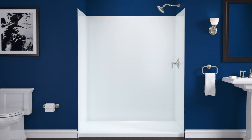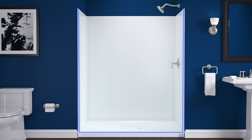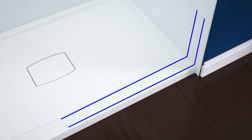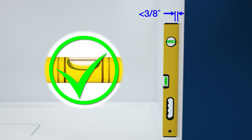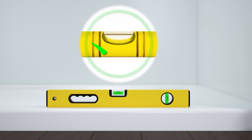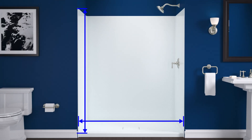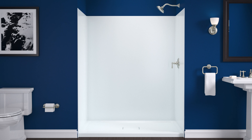Before you begin the installation, confirm the bath or shower ledge and wall meet the following requirements. The ledge and wall must have at least 3 inches of flat surface. The walls must be within 3/8 inch of plumb. The ledge must be level. Confirm the door is correctly sized for your bath or shower. Refer to the shower space measurement video for Kohler sliding doors to determine what size door is right for your showering space. Do not install the door if any of these requirements are not met.